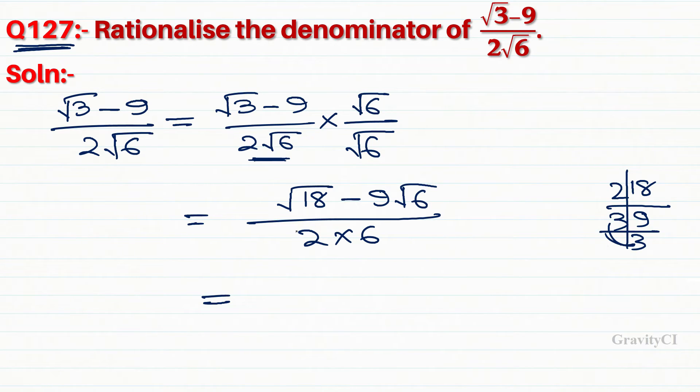3 forms a pair, so we can write √18 as 3√2. So we have 3√2 minus 9√6 upon 12.